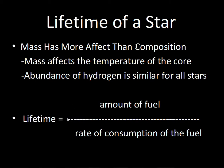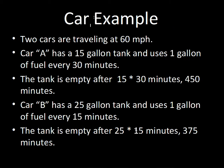We can calculate the lifetime of a star by taking the amount of fuel available and dividing by the rate at which that fuel is consumed. A similar situation applies to a car: you have a certain amount of fuel in the tank and you use a certain number of gallons per mile — that tells you how far you can go. For stars, we take the amount of hydrogen available in the core and divide by how much hydrogen per year they are consuming.